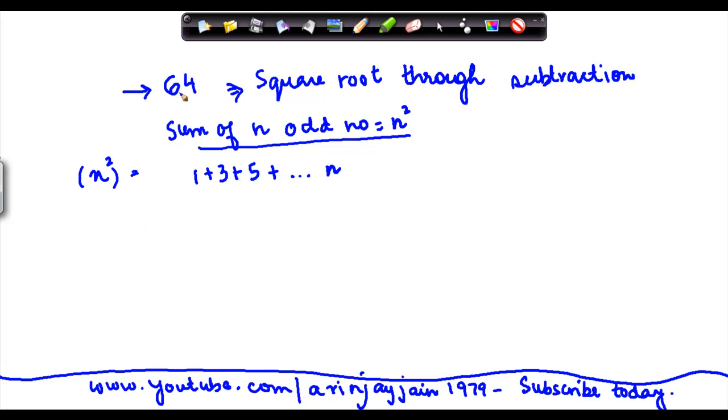Now we know what is the value of n square here. Value of n square is 64. So 64 is equal to 1 plus 3 plus 5 so on up to n.